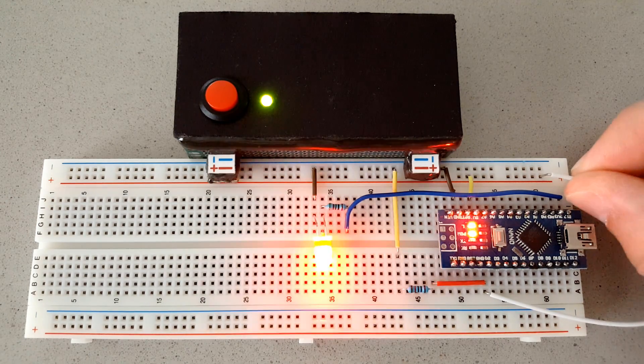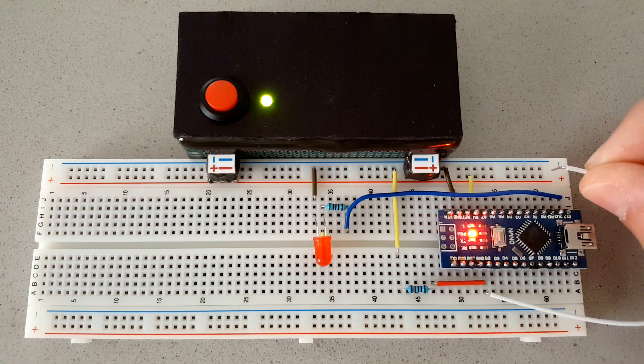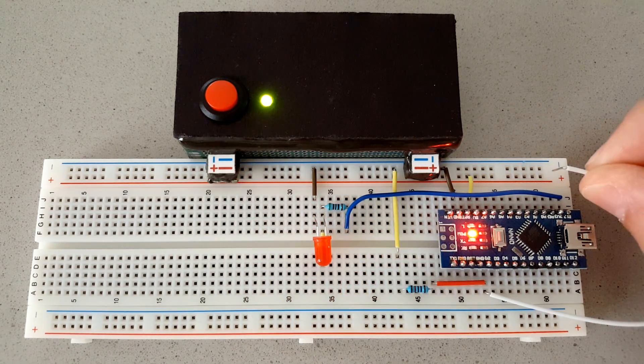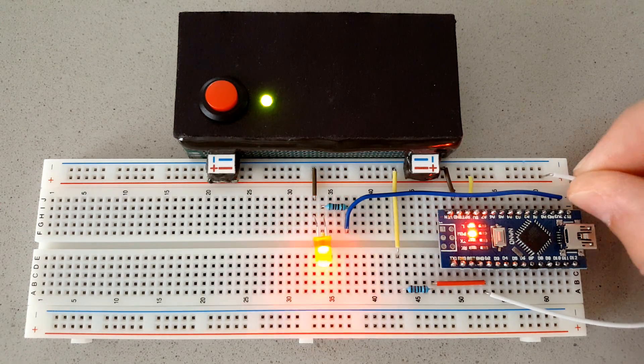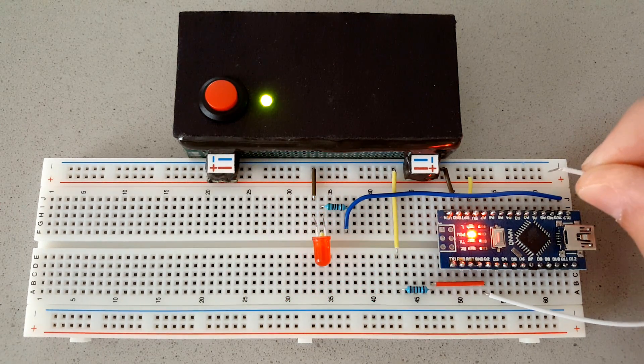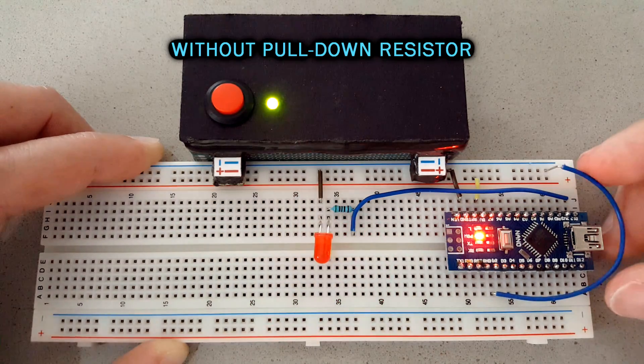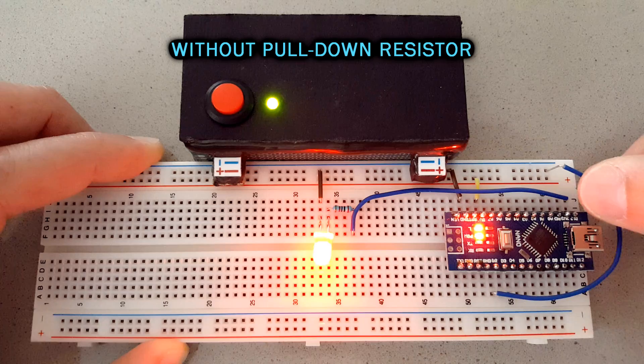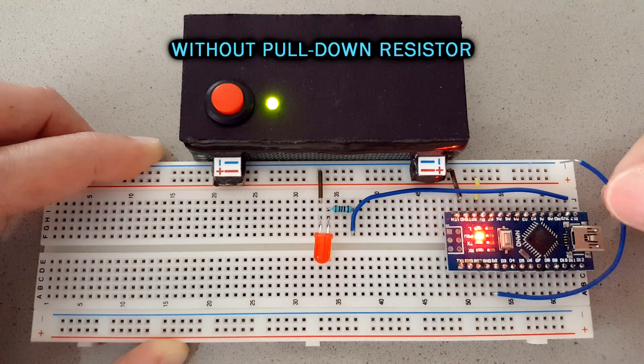When we deal with digital inputs, this means that we need to connect the input to the source voltage, that usually for Arduino is 5 volts, or we need to connect to ground. It's either of the two options. If we left the pin floating, meaning it's not connected to anything, it's going to act crazy reading a mess of undefined states.